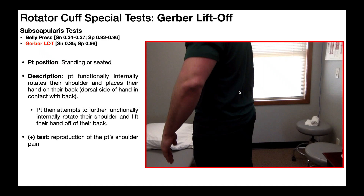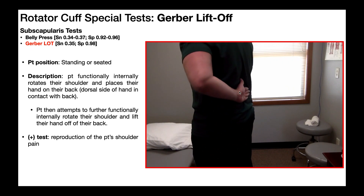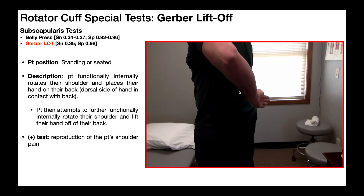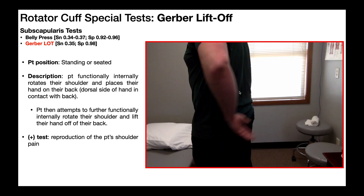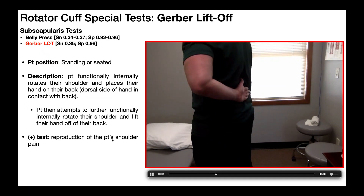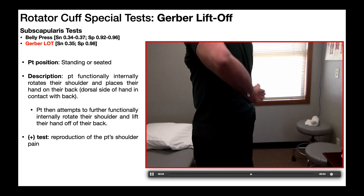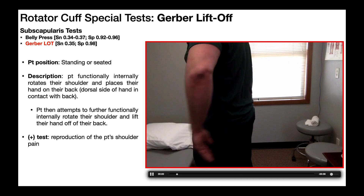So there's the functional internal rotation, dorsal side of the hand in contact, and there's the liftoff. A positive test is reproduction of the patient's familiar shoulder pain, in particular during the liftoff component of the Gerber liftoff test.